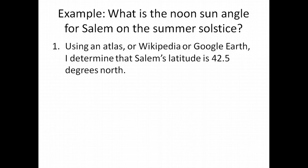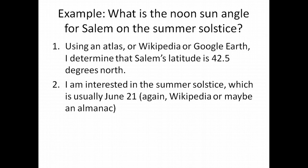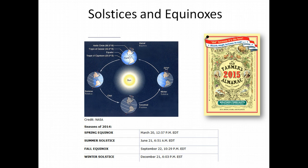Let's try an example: What's the noon sun angle for Salem on the summer solstice? First, we need to find Salem's latitude, which you can look up easily using Google Earth, Google Maps, or Wikipedia. Second, we're interested in the summer solstice — June 21st — which you can confirm using an almanac or a government science website like NASA, which provides estimates of when solstices and equinoxes occur.